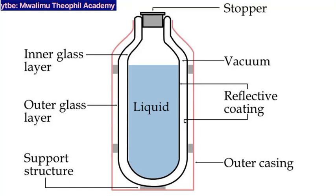How is heat loss through conduction reduced in a thermos flask? There are two main ways through which heat loss by conduction is reduced in a thermos flask.